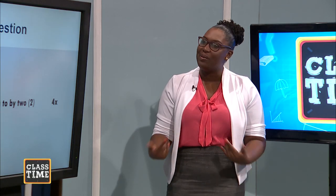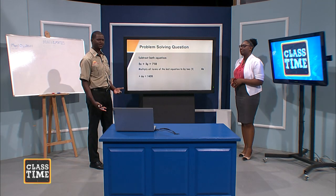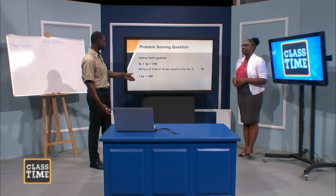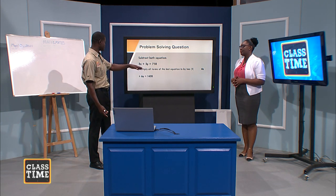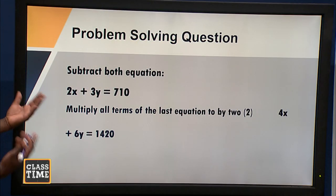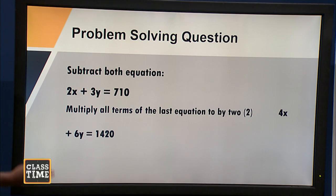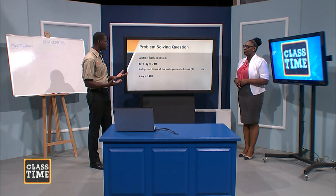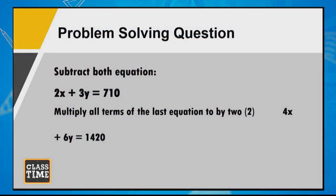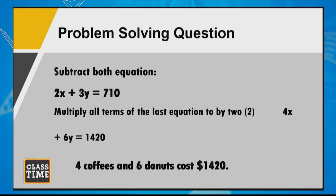I wonder if I'm correct — are we going to check it? We definitely can check. Our viewers at home can check as well. We would substitute our value for X, which is for one coffee, and our value for Y, multiply four times the cost for the coffee, six times the cost for the donut, and then our answer should be $1,420. And we simply write out our final answer: four coffees and six donuts cost $1,420. Put on a nice pretty bow, and we're finished.